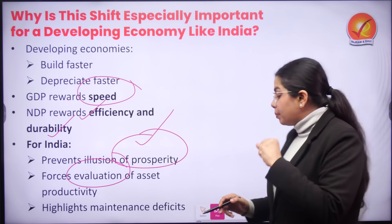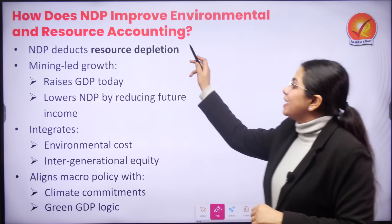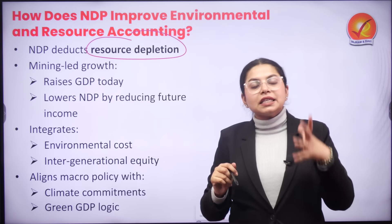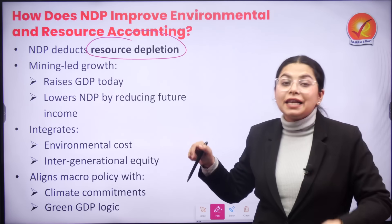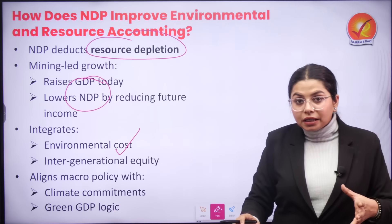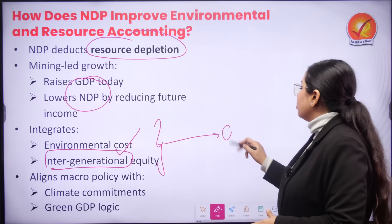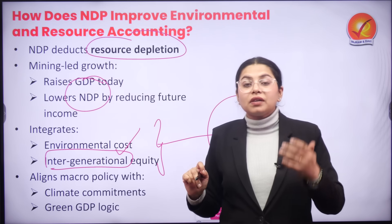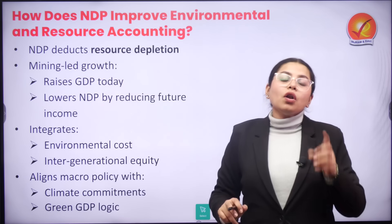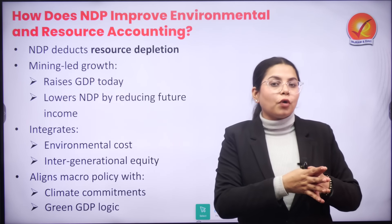Another thing that net domestic product brings to the table is understanding the environmental cost. NDP deducts resource depletion — for example, mining as an economic activity might show increased GDP, but it will lessen the net domestic product because it is reducing future income. NDP directly integrates environmental cost and brings intergenerational equity into the picture — both factors missing from gross indicators. This means our net zero goals, climate change commitments, macro policy, and green GDP can all be aligned with our national income indicator, facilitating better policy making.